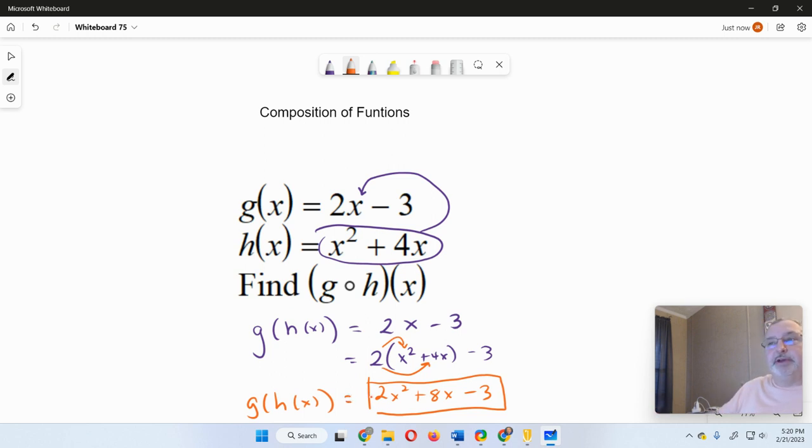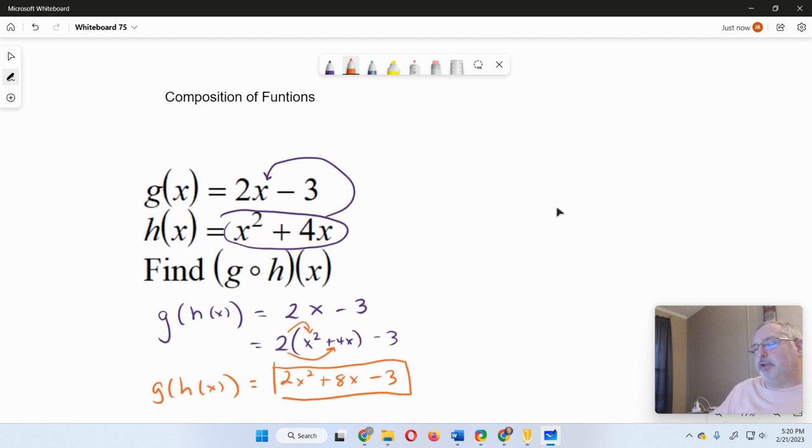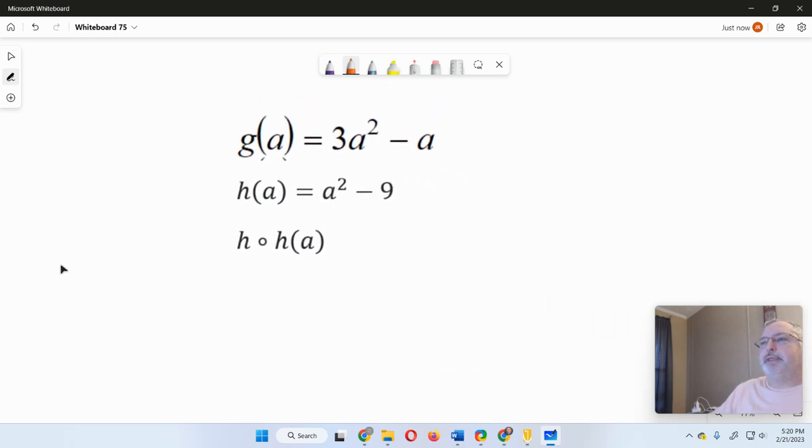So let's take a look at some other examples. There's different ways and things are given, different functions. It doesn't matter. It's all the same. So like on this one, we're given g of a, and we're given h of a, and then we're asked to find h of h of a. Well, don't get confused here. We just don't need that g function. That's just extra information. So we're going to forget about it.